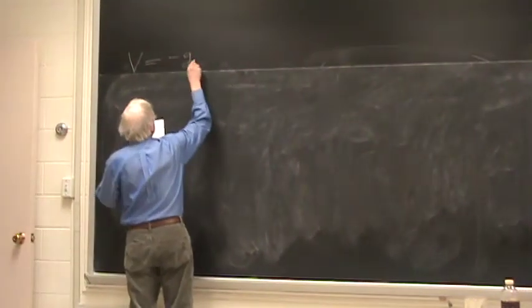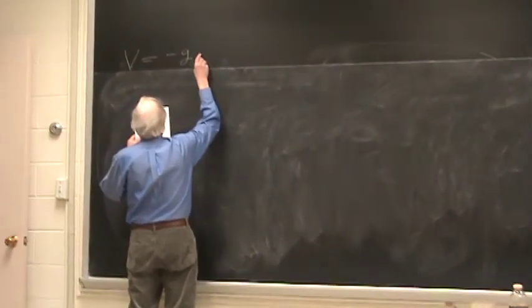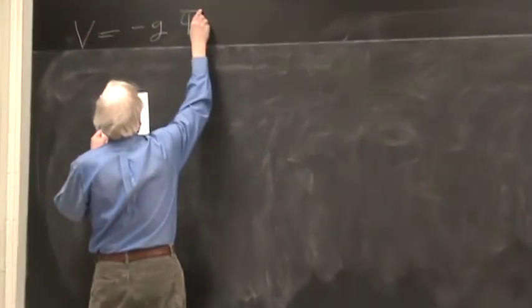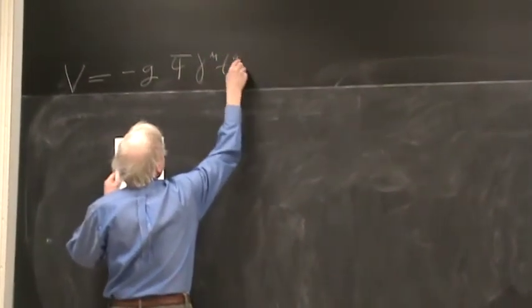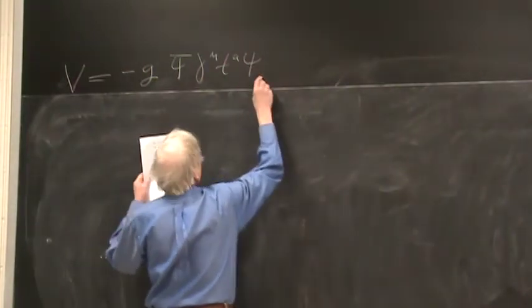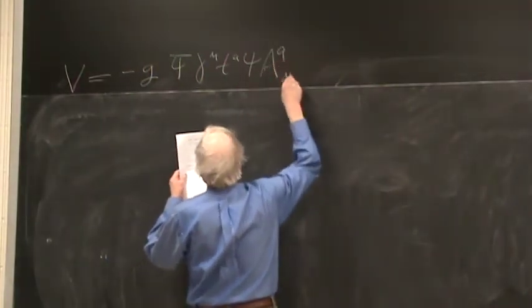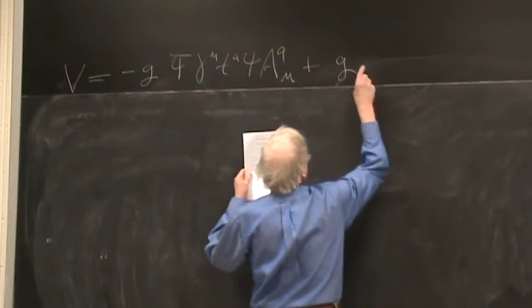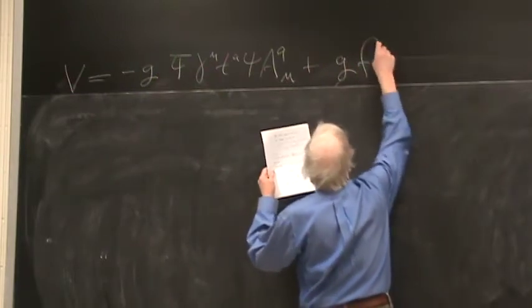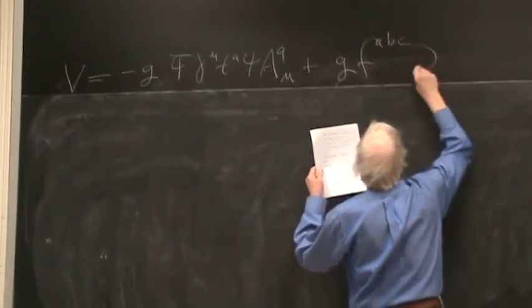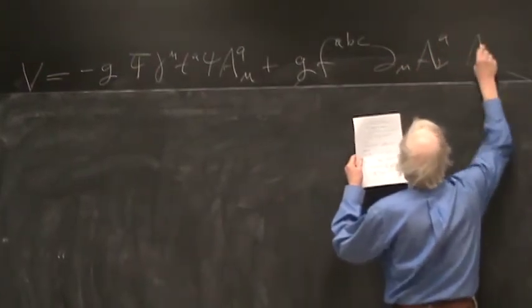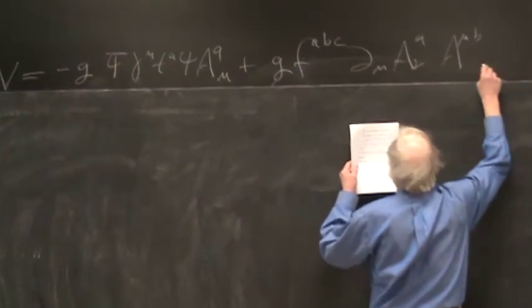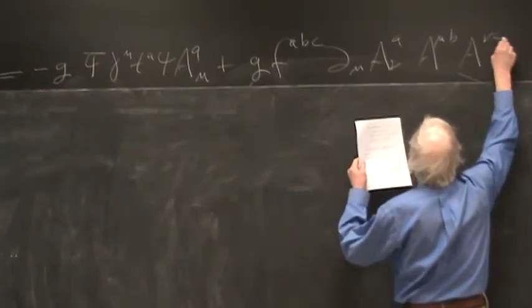The interaction Hamiltonian is minus G psi bar gamma mu ta psi a mu plus G f abc d mu a nu a, a mu b, a nu c.